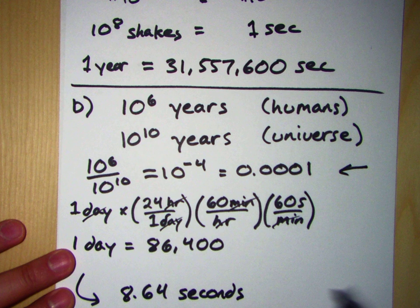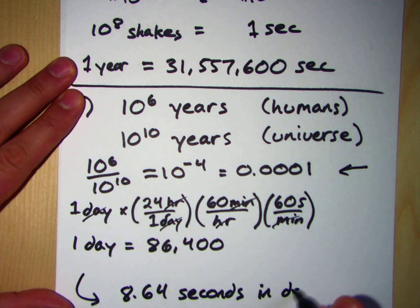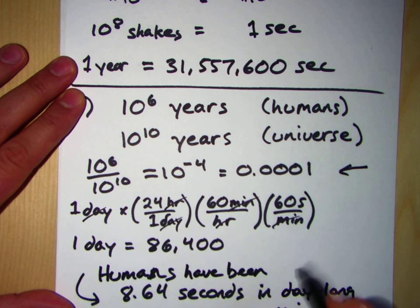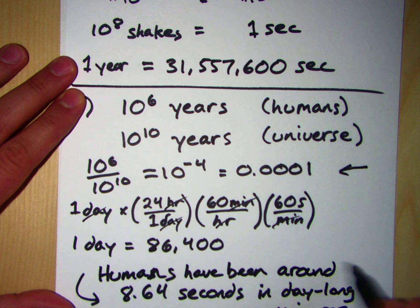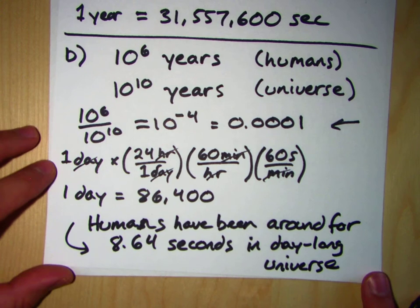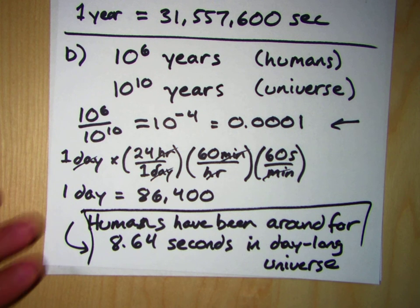Humans in the day long, in the day long universe, if you will. So, to answer this question sort of formally, humans have been around for 8.64 seconds in the day long universe.